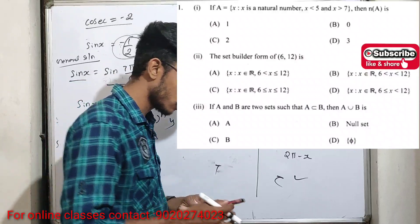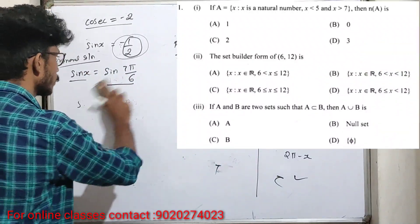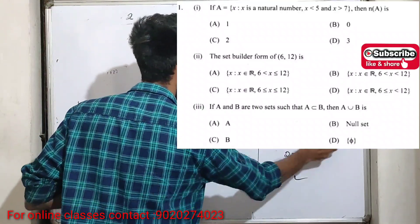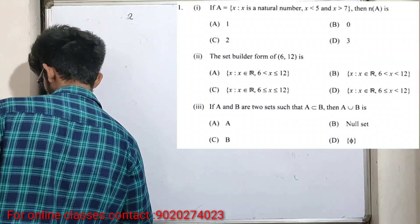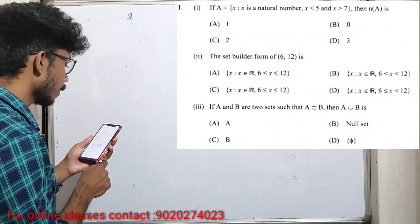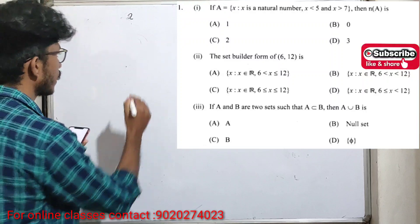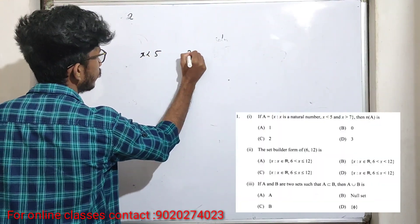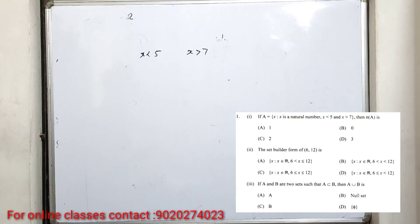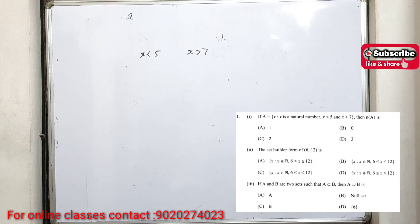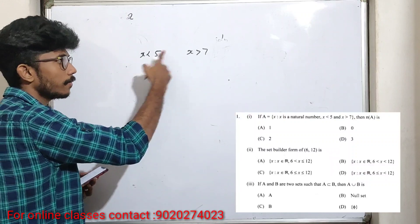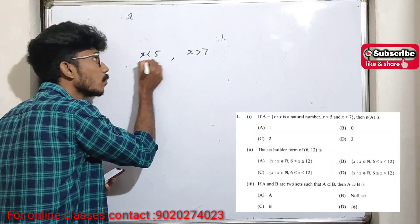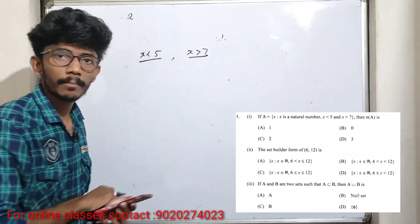Now we are going to discuss the first question. The question is: if x is a natural number and x is less than 5, or x is greater than 7, find the set of values of x.